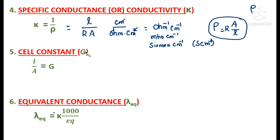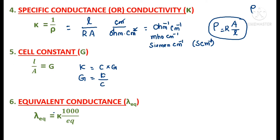Next is cell constant, represented by capital G. The quantity L/A — length divided by area of cross section — is called the cell constant. The formula relating conductivity (kappa), conductance, and cell constant is: kappa = conductance × cell constant, so G = kappa / conductance. Since 1/conductance equals resistance, this can also be written as G = kappa × R.